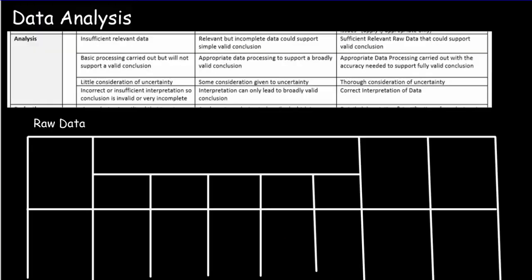Let's go on to data analysis. The first aspect is about getting sufficient relevant raw data. Relevant data really comes down to did you isolate variables, which comes out of your procedure. Sufficient data means do you have enough increments, enough trials, a big enough range of your dependent and independent variable? And that should really be highlighted in your method.